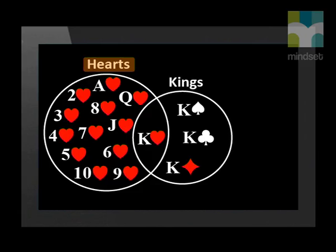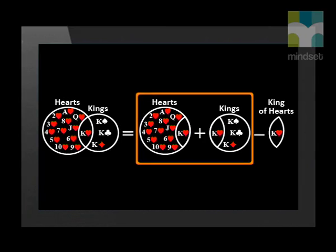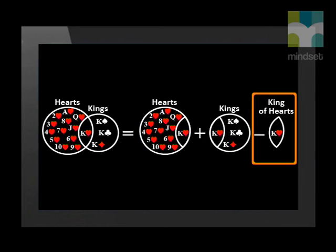So what happens if we want the probability of event A or event B if they are not mutually exclusive? Two events are not mutually exclusive if they have an intersection or if they can happen at the same time. For example, with a pack of cards: all hearts are in subset one and all kings are in subset two. These are not mutually exclusive because you can draw a king of hearts, which is both a king and a hearts card. To find the probability of either hearts or kings occurring, we get the probability of drawing only a hearts card plus the probability of drawing only a king, and then subtract the intersection — because adding the two subsets together counts the intersection twice.